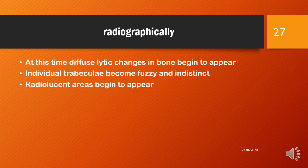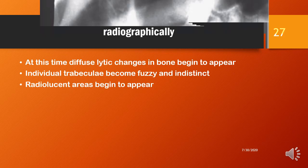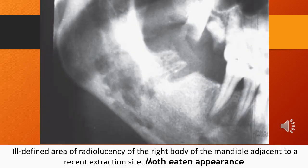Radiographically, at this stage of osteomyelitis, diffuse lytic changes in bone begin to appear and individual trabeculae become fuzzy and indistinct. Radiolucent areas begin to appear. The panoramic image shows an ill-defined area of radiolucency of the right body of the mandible adjacent to the recent extraction site. This is the classical appearance of chronic osteomyelitis, called a moth-eaten appearance.